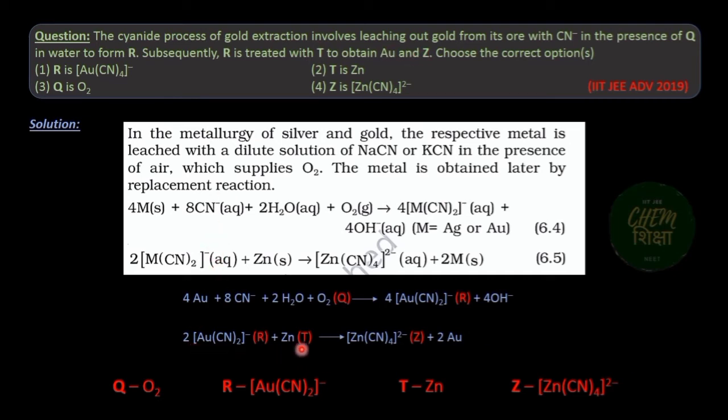So the reagent T with which complex R reacts is metal zinc, which is more reactive than gold and replaces the gold from the complex to form a tetra-cyano zinc complex which is the reagent Z.